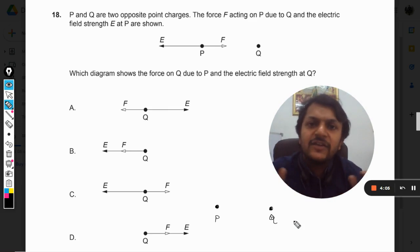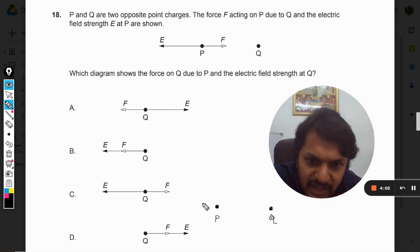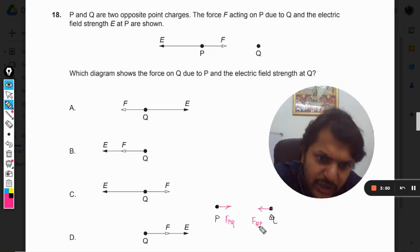If they are of opposite sign, there will be attractive force. So P is having a force which is in this direction. Obviously Q will also be having force in this direction. So I can say that this is the force on P because of Q and this is force on Q because of P.